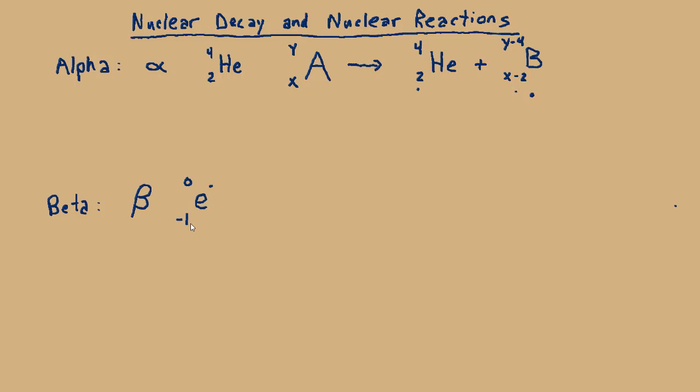What you have to understand is this beta process is the transforming of a neutron into a proton. If I start with my generic element A with X protons and Y total nucleons, it's going to turn into an element that has one more proton. But since all we're doing is moving from neutron to proton, the total number of nucleons stays the same.